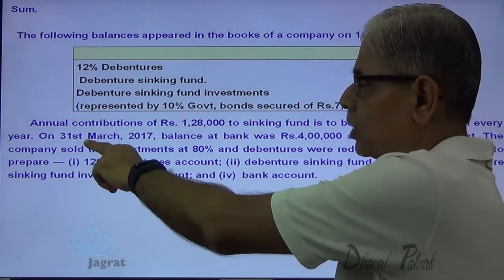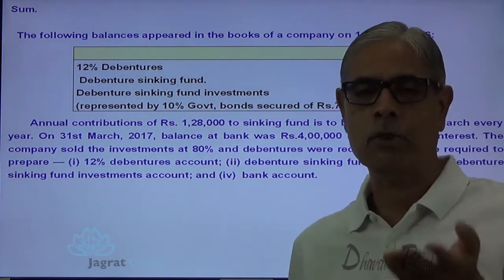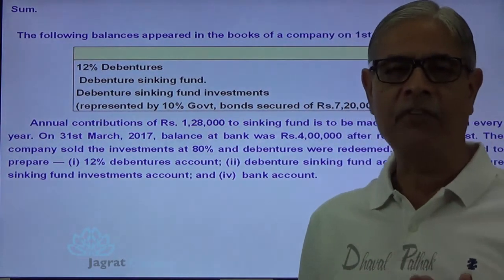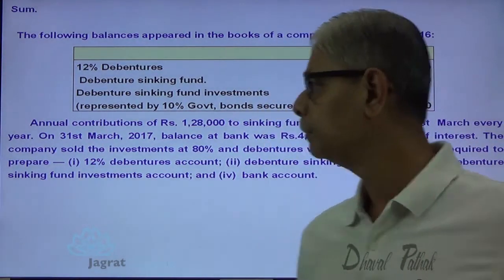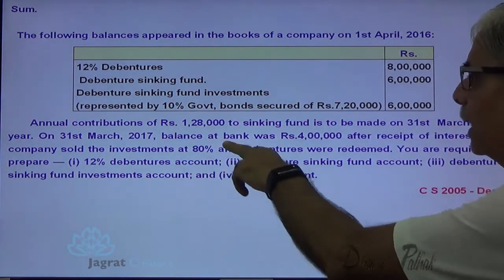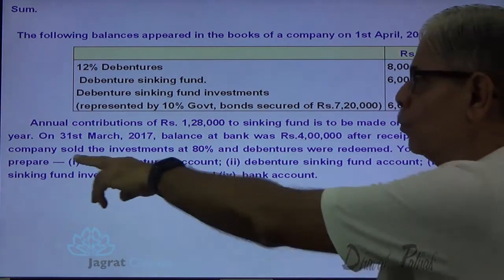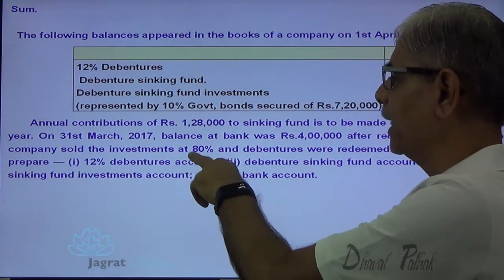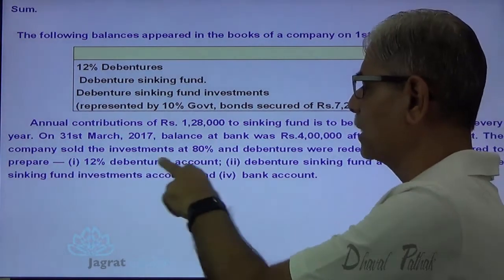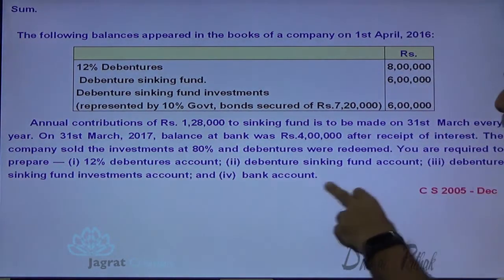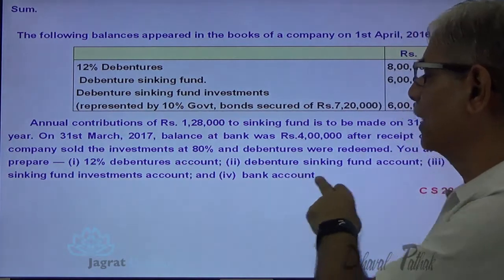On 31st of March 2017, one year has passed, so 1,28,000 is to be transferred from profit and loss appropriation account to sinking fund account. The balance at the bank is 4 lakhs after receiving the interest. Companies sold their investment at 80% and debentures were redeemed. You are required to prepare 12% debentures account, debenture sinking fund account, debenture sinking fund investment account, and the bank account.